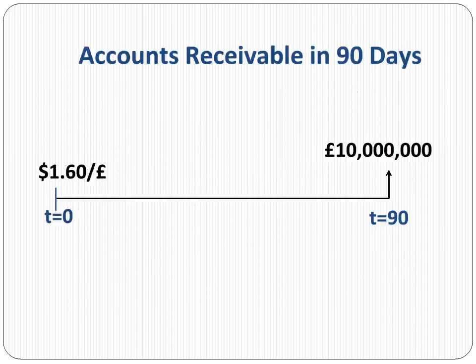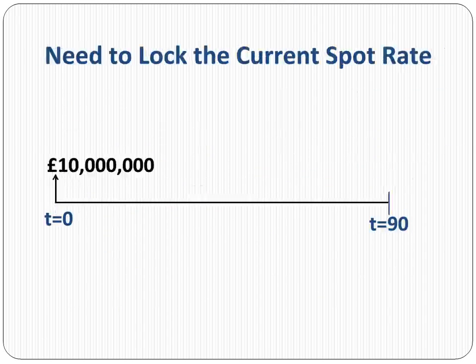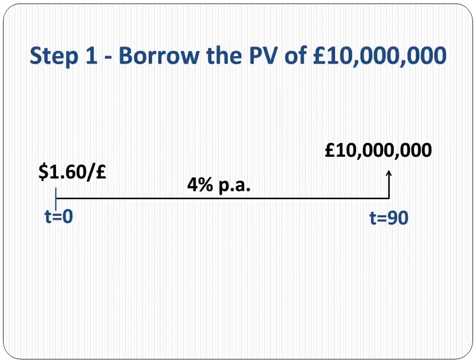Here we have a timeline showing the current spot rate of $1.60 per pound. The idea behind a money market hedge is to lock the current spot rate. One way to accomplish this would be to have the customer make a payment today; however, it will be very difficult to convince the customer to do so.